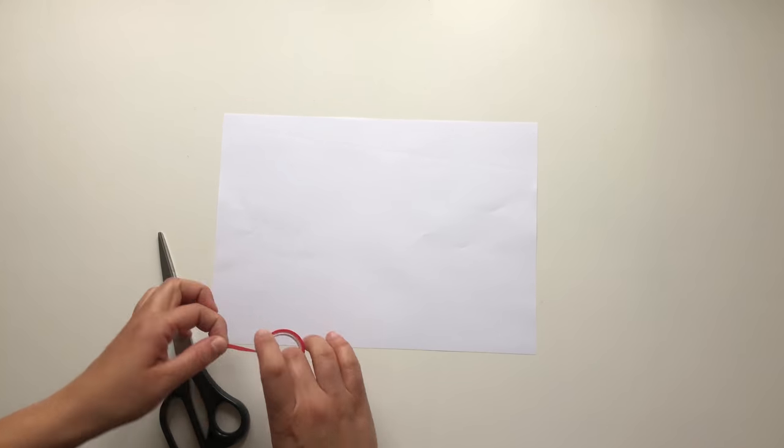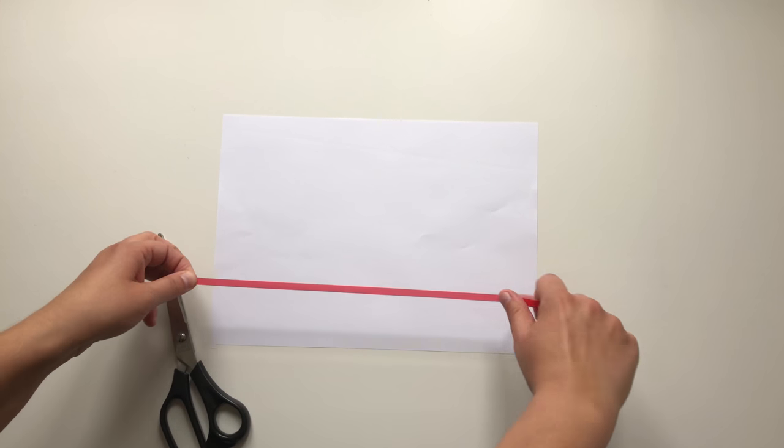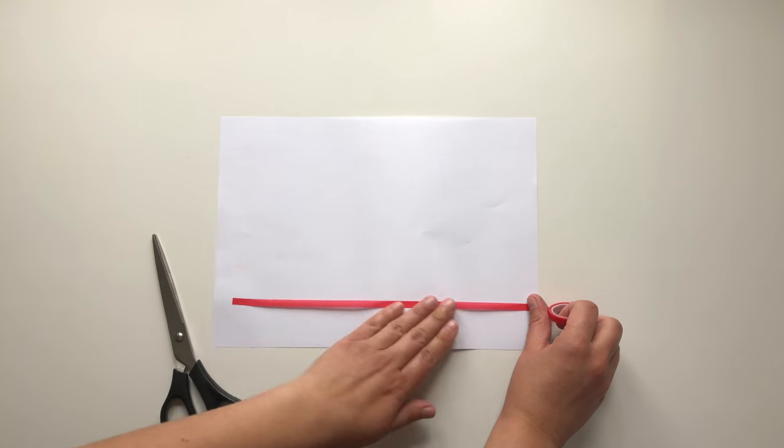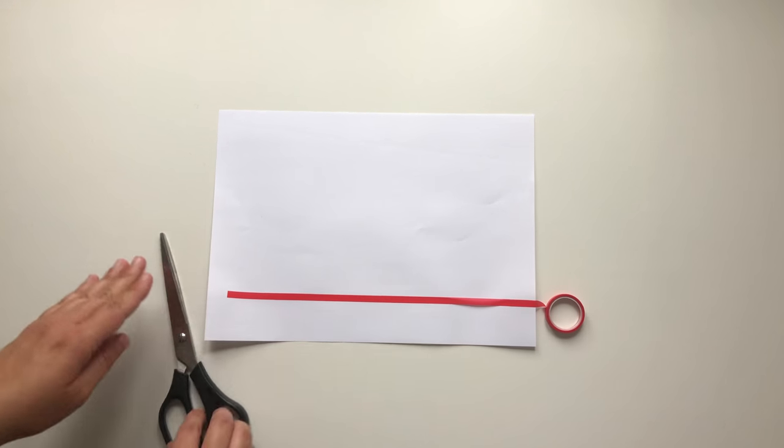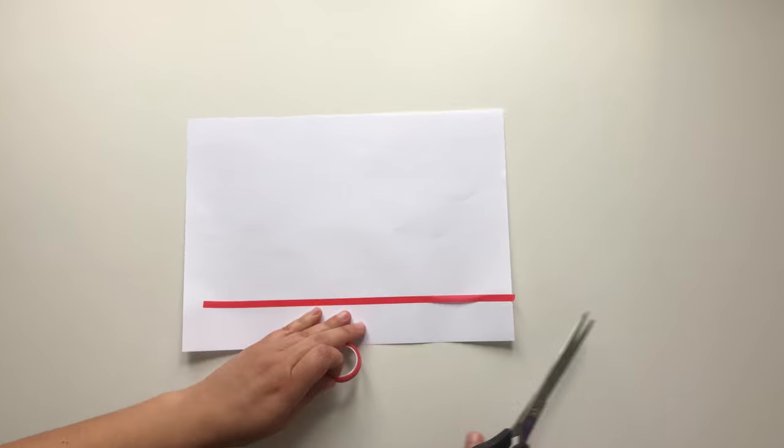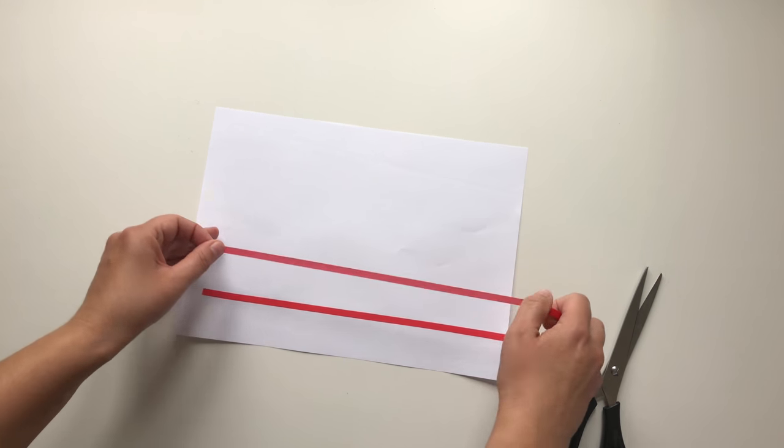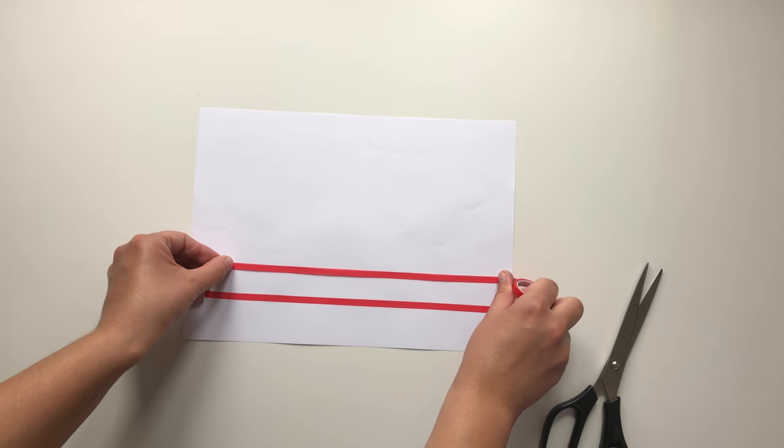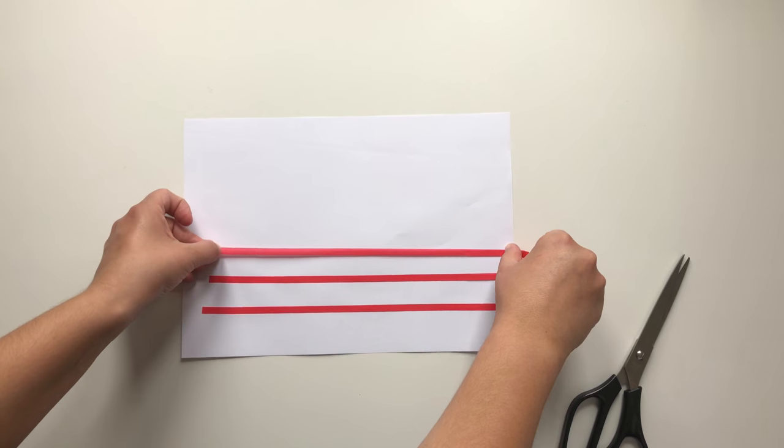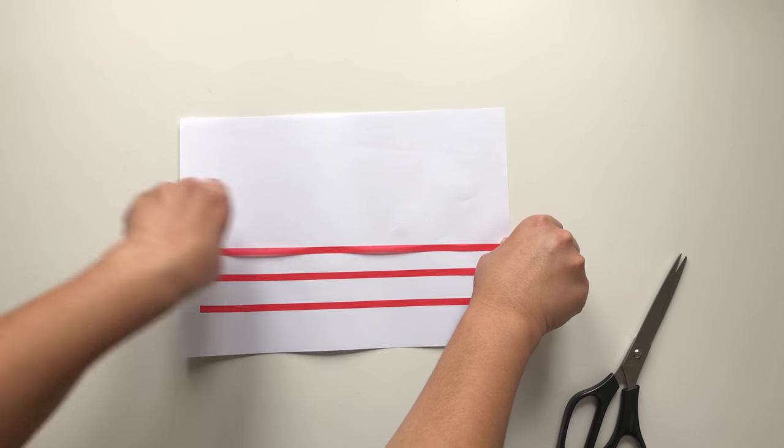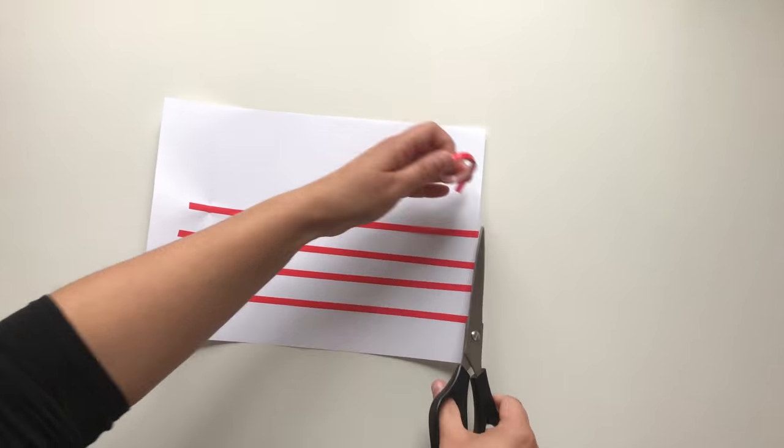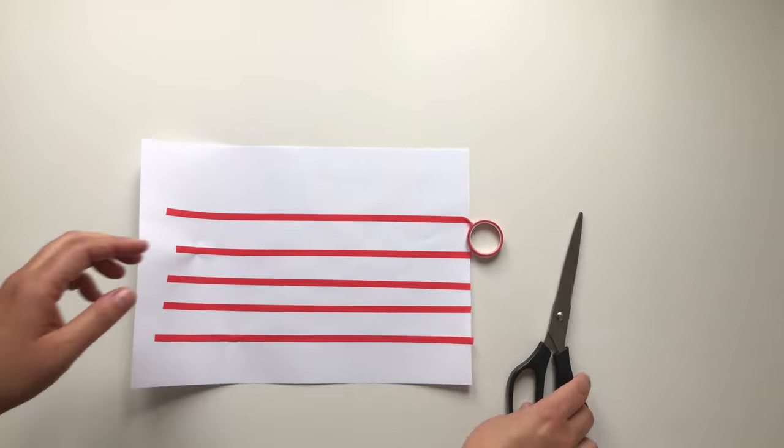Now we are going to create a stave. I chose a red paper tape and you just need to paste it on the paper. I'm starting from the bottom line of the stave and then follow up for the next four lines. Make sure that you have enough spaces in between the lines.